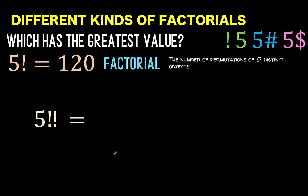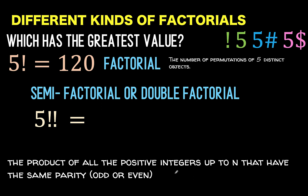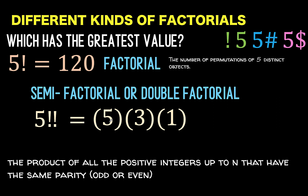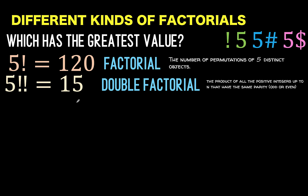The next one is 5 double factorial, written with two exclamation points — also called the semi-factorial or double factorial. Some may think of 5 double factorial as bigger than 5 factorial, but that is not correct. The double factorial is the product of all positive integers up to n that have the same parity. Since 5 is odd, we multiply all the odd numbers: 5 times 3 times 1, which equals 15. This has some applications in series in calculus.